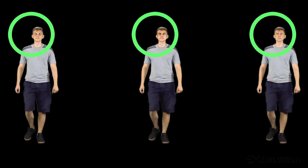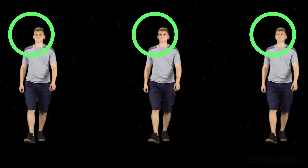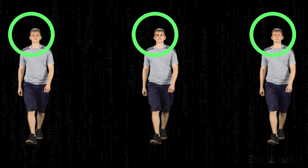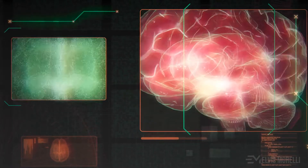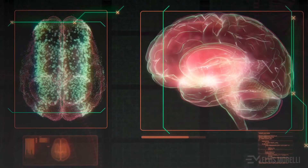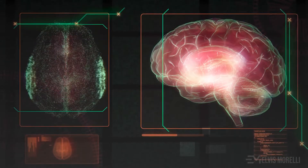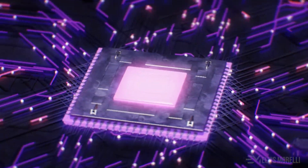Deep learning is a subset of machine learning, which is essentially a neural network with three or more layers. These neural networks attempt to simulate the behavior of the human brain, albeit far from matching its ability, allowing it to learn from large amounts of data.